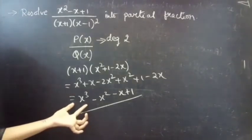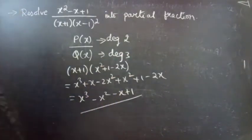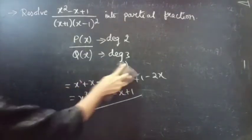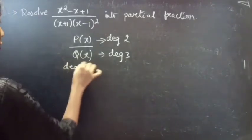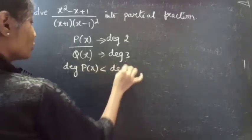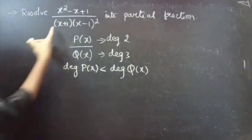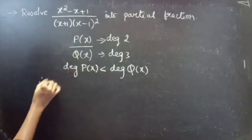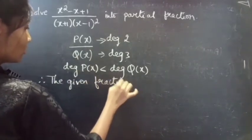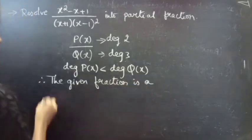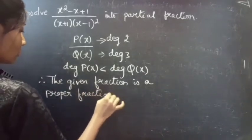The degree of Q(x) is 3. Since the degree of P(x) is less than the degree of Q(x), we can say that the given fraction is a proper fraction. Therefore the given fraction is a proper fraction.